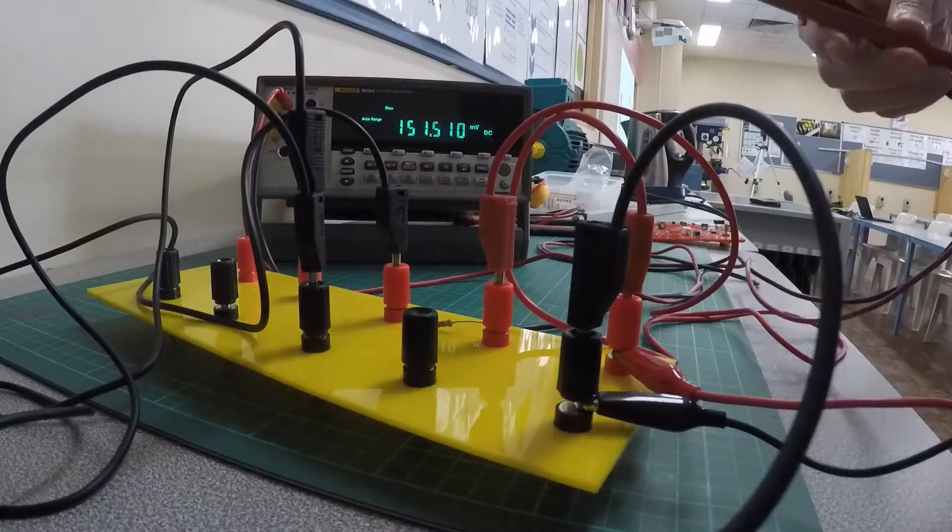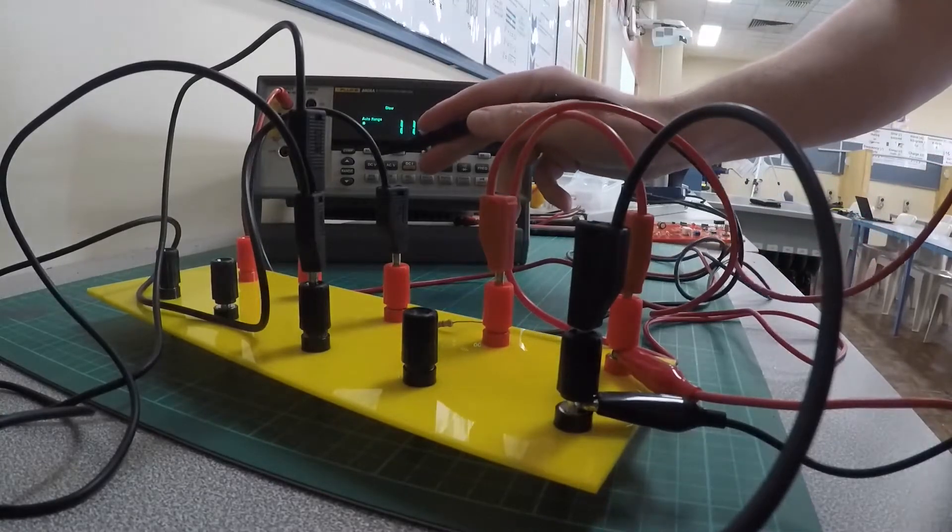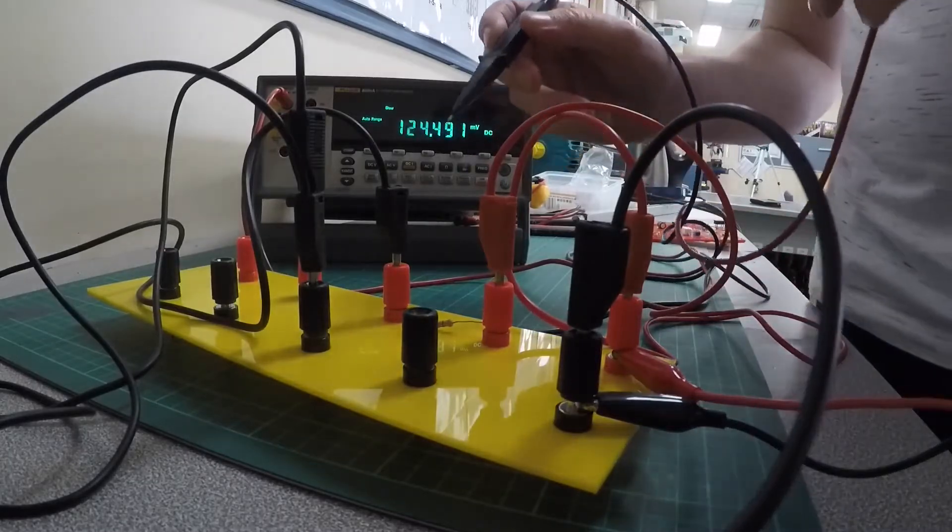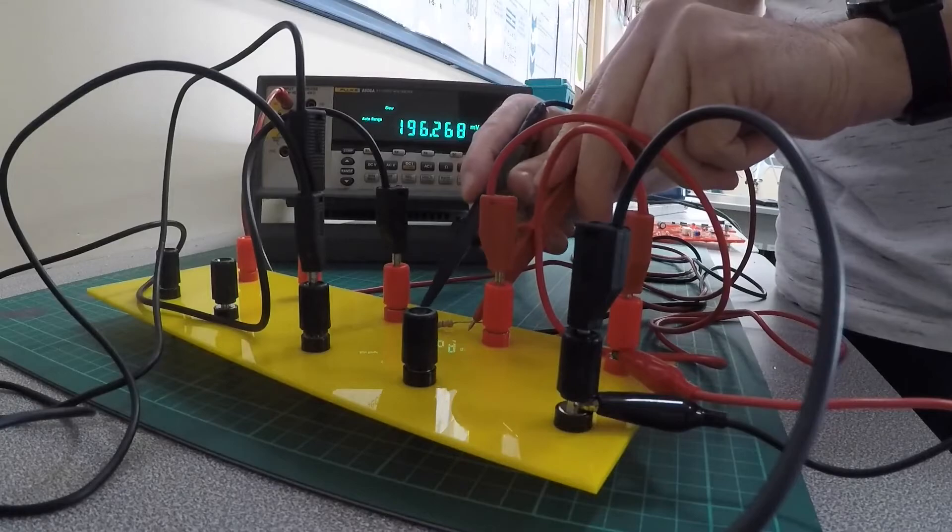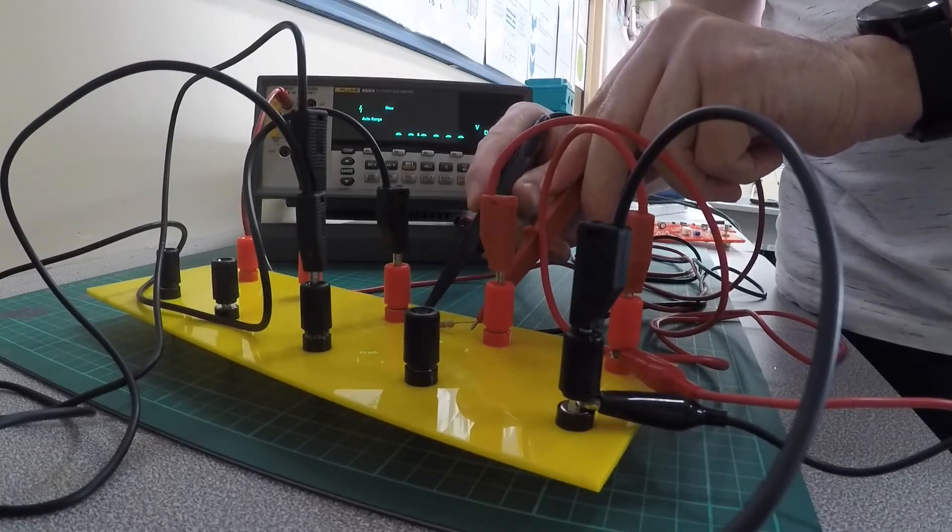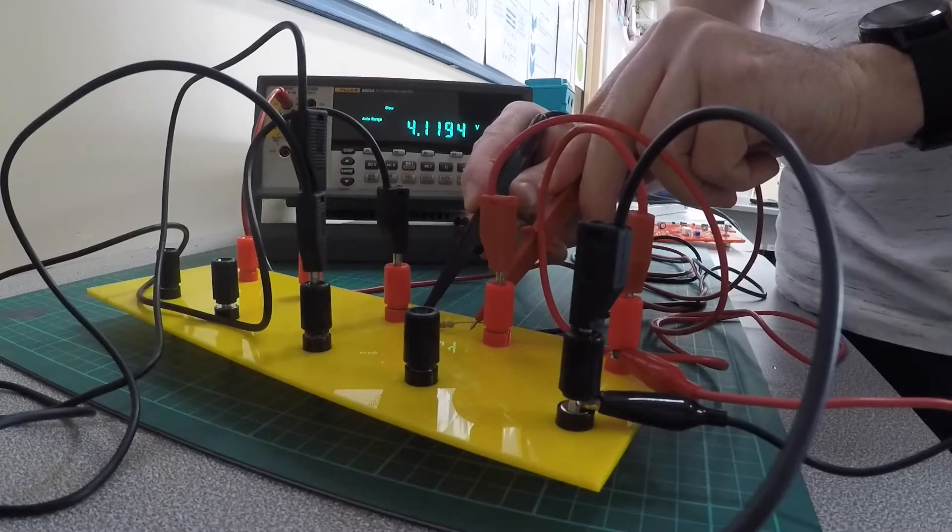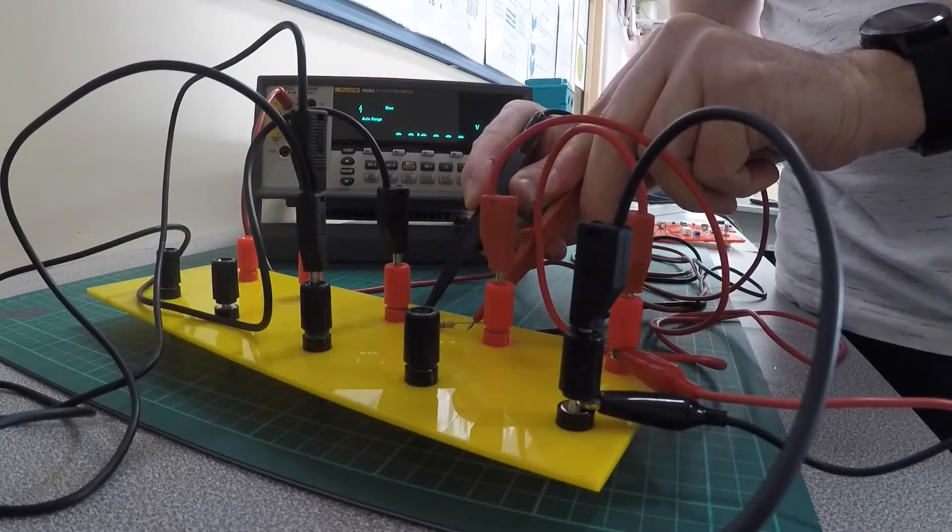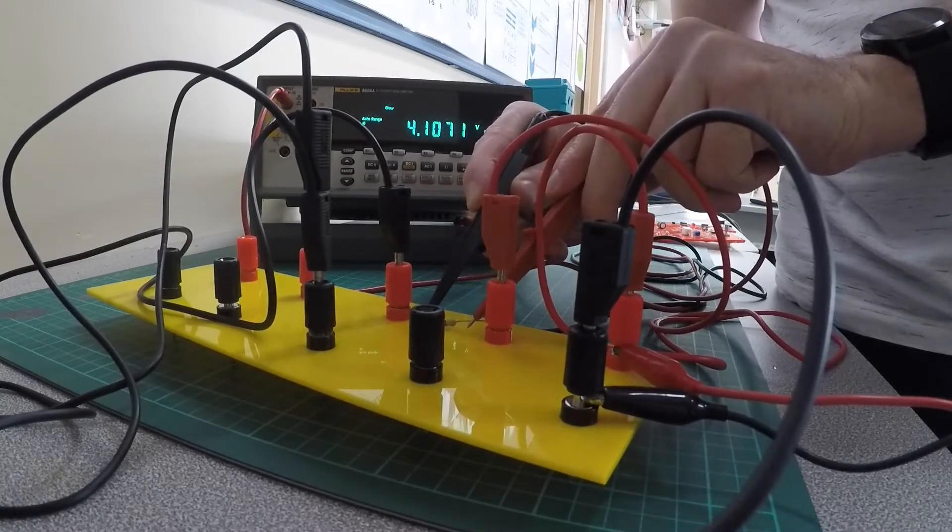And now we're going to measure the voltage across the load. So now I've got it set on DC volts. And I'm going to put my multimeter in parallel or across the load from positive to negative. And that has a voltage drop of 4.1 volts across the load.